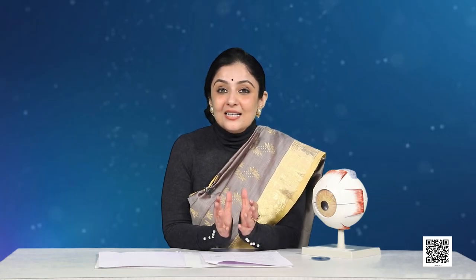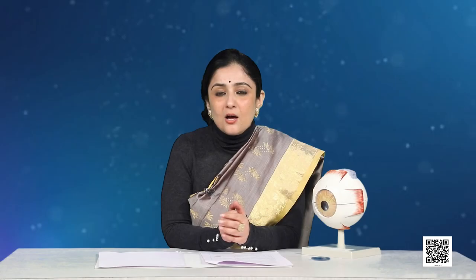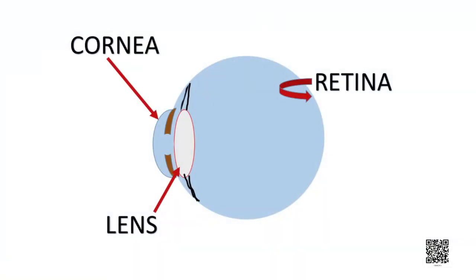Light enters the eye through a thin membrane — the cornea — which is a transparent bulge on the front surface of the eyeball. Most of the refraction, that is the bending of light when it enters another medium, occurs at the outer surface of the cornea. When the light rays then fall on the eye lens, further refraction takes place.